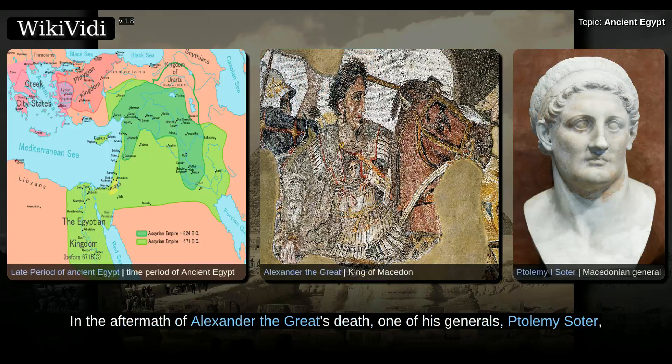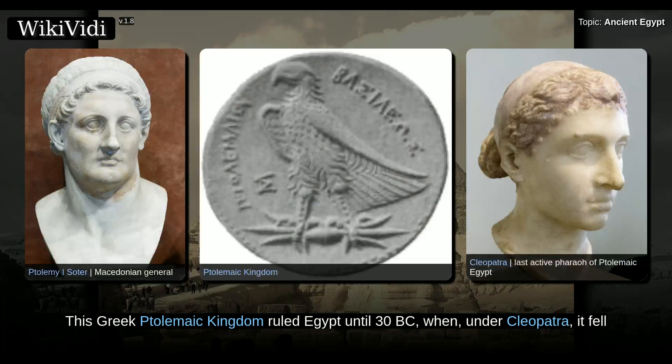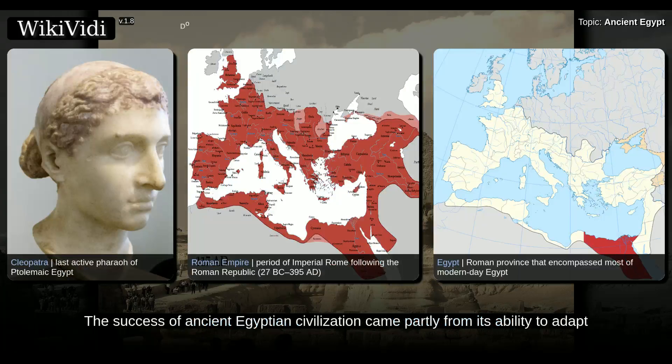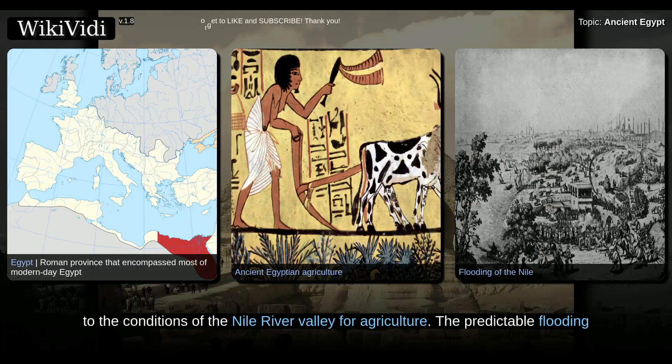In the aftermath of Alexander the Great's death, one of his generals, Ptolemy Soter, established himself as the new ruler of Egypt. This Greek Ptolemaic kingdom ruled Egypt until 30 BC, when, under Cleopatra, it fell to the Roman Empire and became a Roman province.